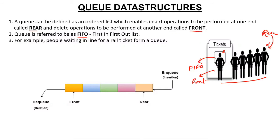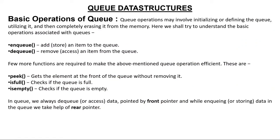If you see this diagram, this is a linear queue or array where elements are five, six, seven, eight, and nine, with indices zero through four. Front is a pointer at index zero, representing the first element; rear is at index four, representing the last element. If you want to dequeue — that is delete from the queue — you delete from front. If you want to enqueue — that is insert — you insert from the rear.